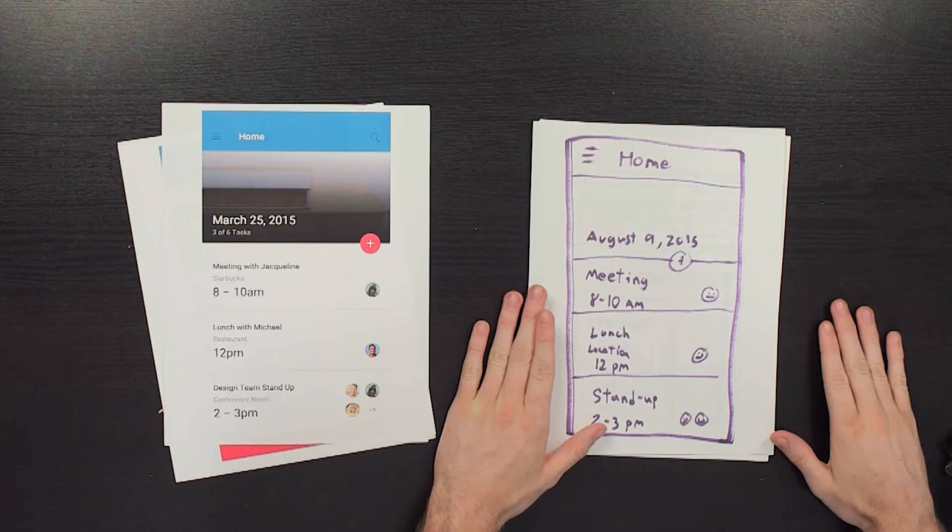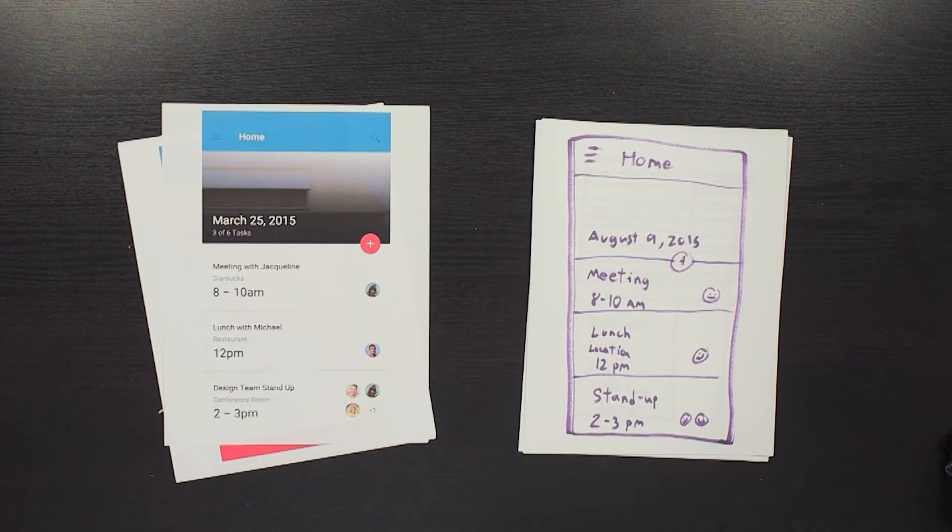These paper prototypes are going to be super low fidelity, but they will give users enough of an idea of your app that their feedback will tell you if you're going in the right direction.